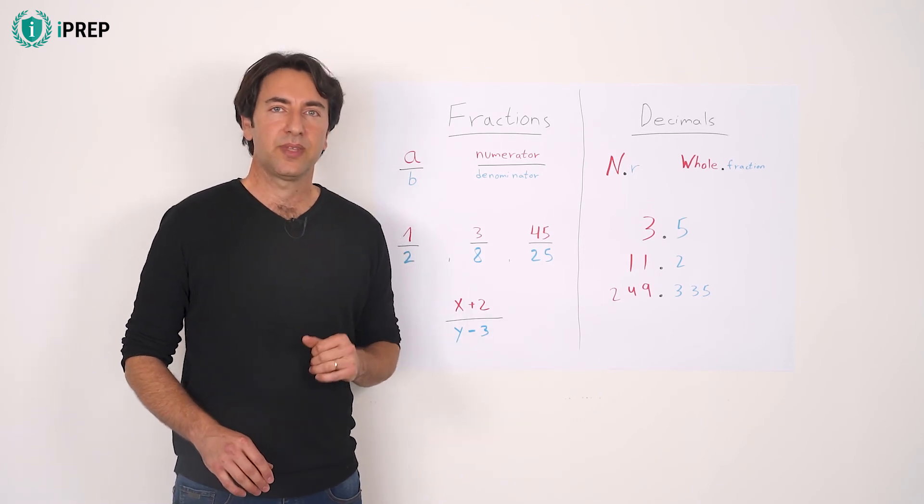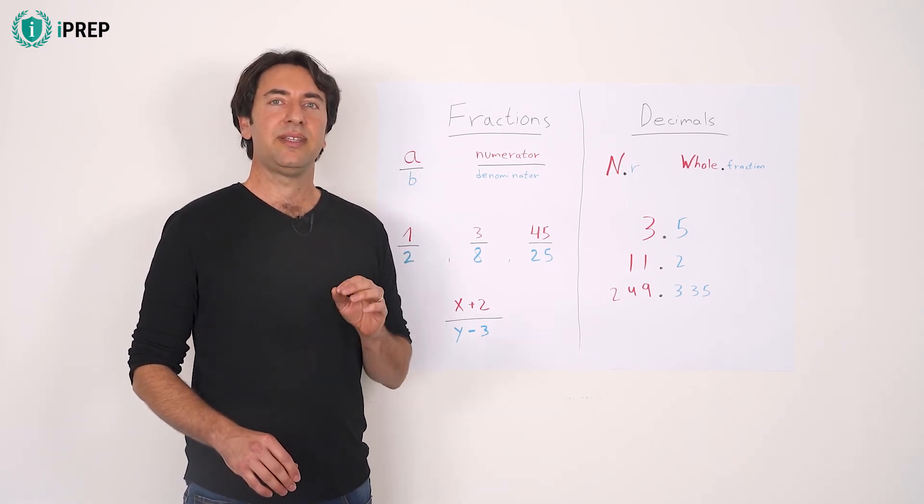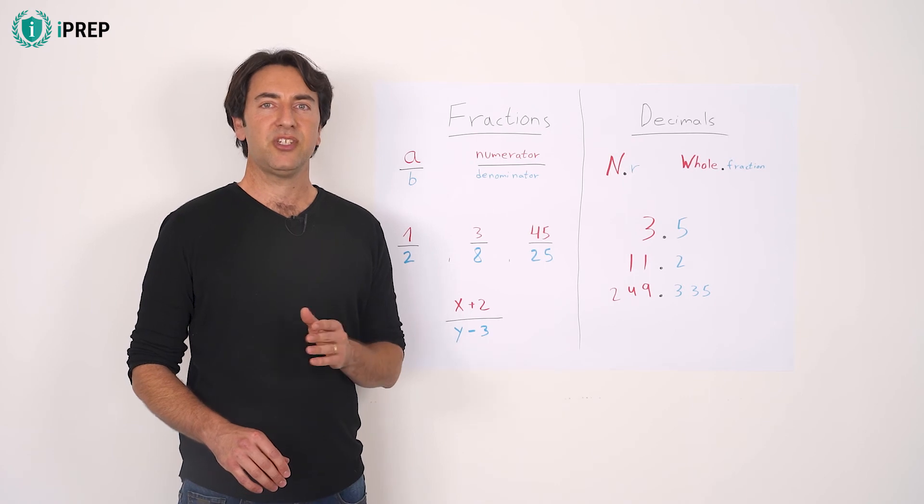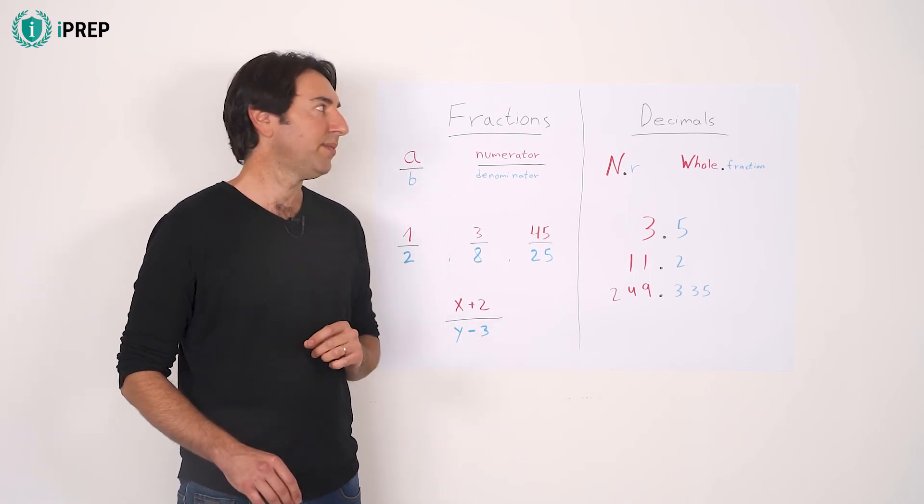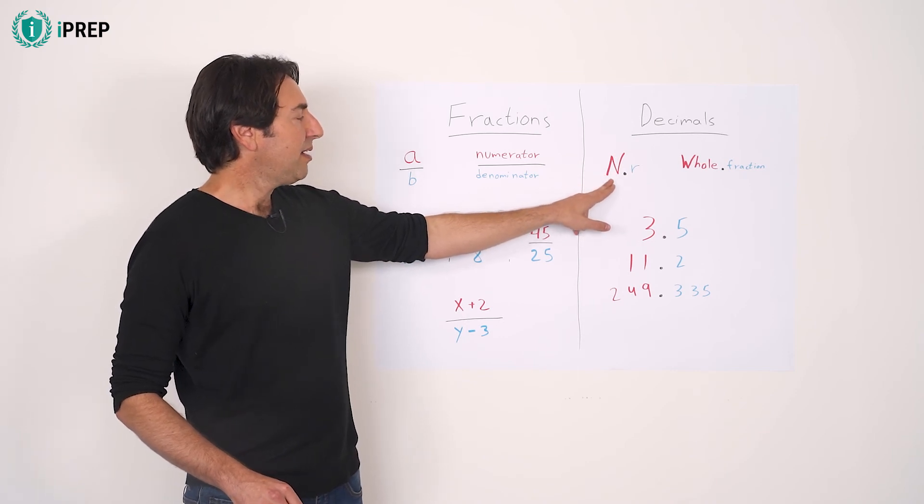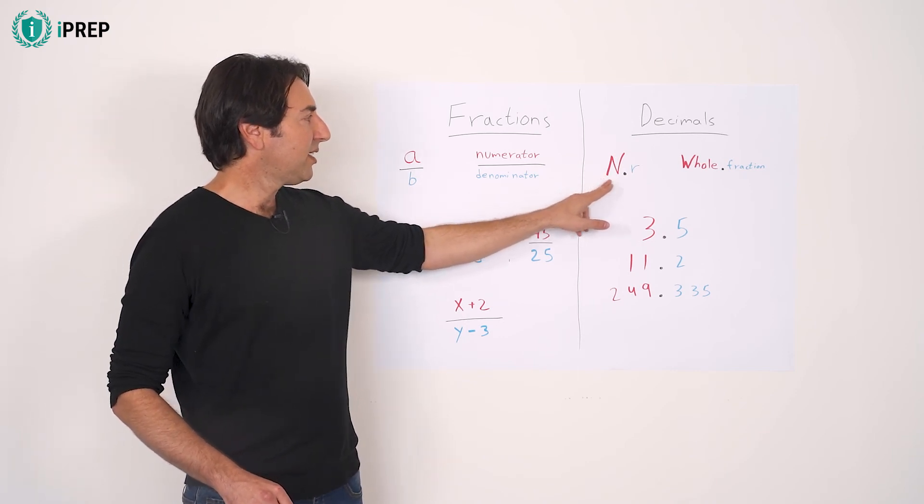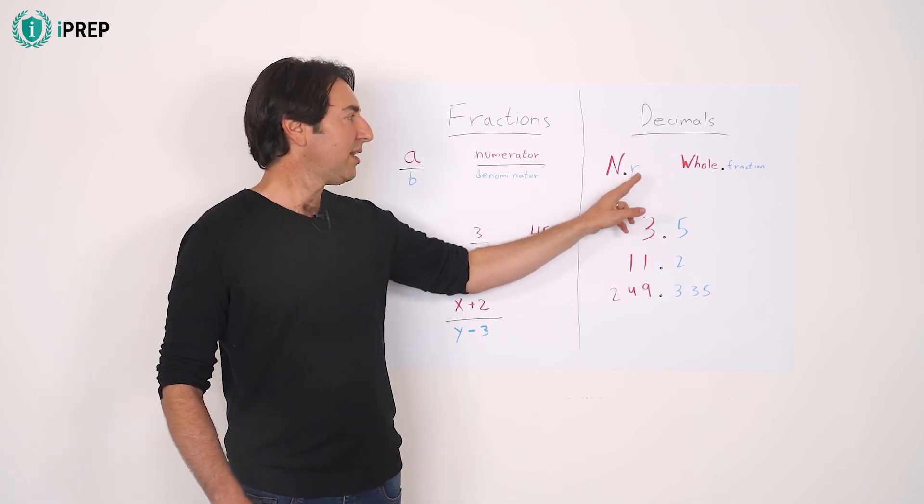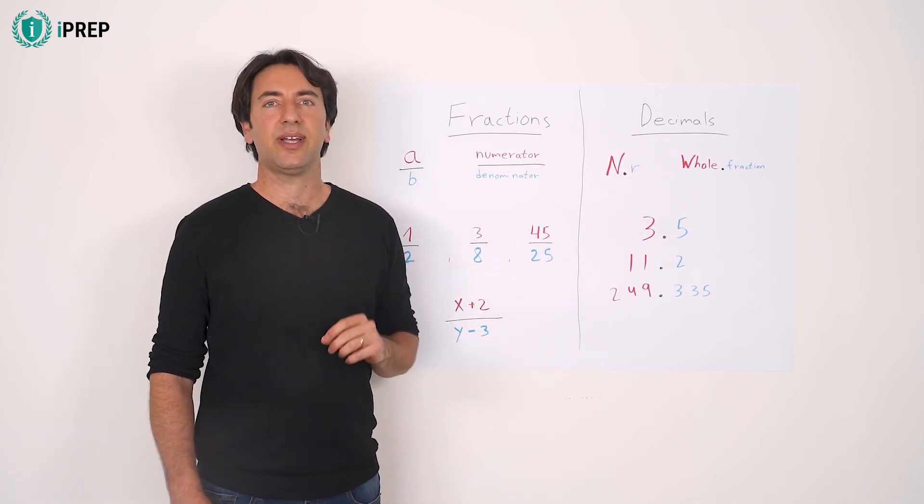A decimal number is a number that uses the decimal point followed by digits that show a value smaller than 1. In the decimal number, the number to the left of the decimal digit is called the whole, and the number to the right of the decimal digit is the fraction.